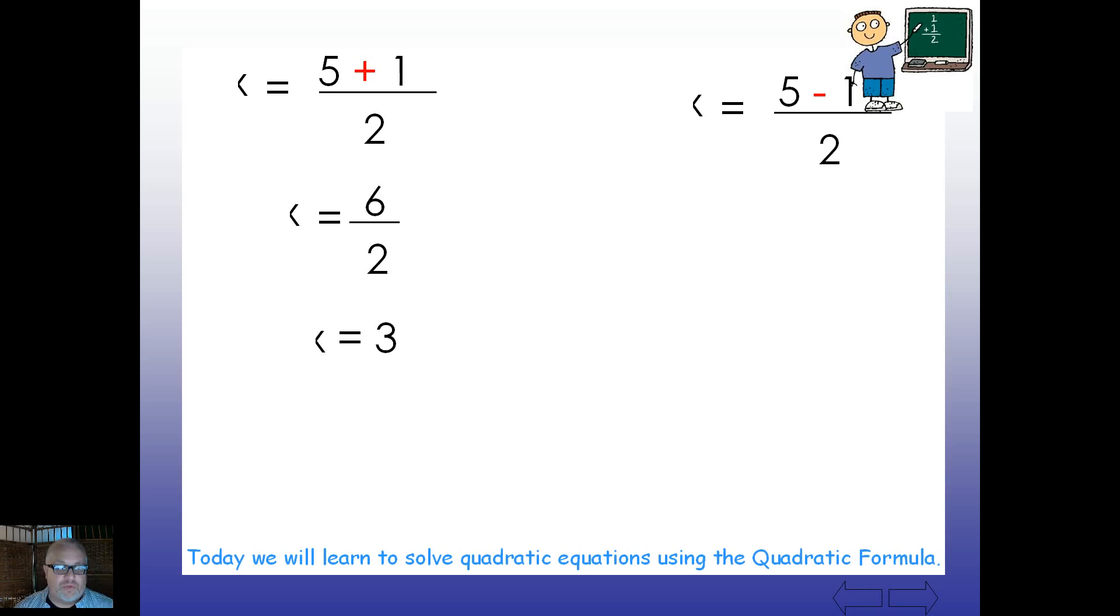We've got 6 over 2, which of course is 3. 5 minus 1 over 2, which is 4. And we end up with your solution set of 2, 3.